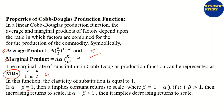In the Cobb-Douglas production function, one minus alpha is basically beta. If alpha plus beta equals one, we have constant returns to scale. If it is greater than one, we have increasing returns to scale. If it is less than one, we have decreasing returns to scale.